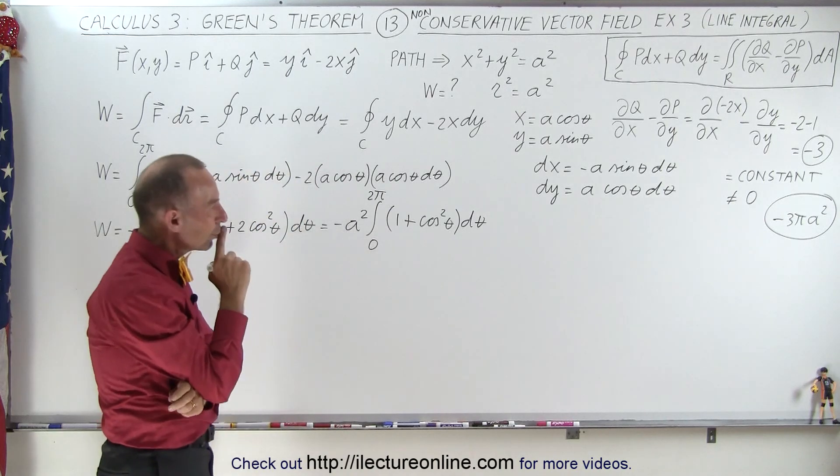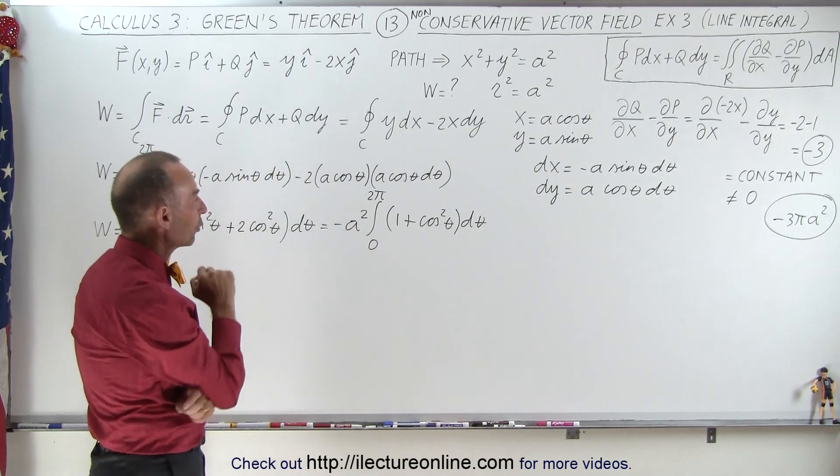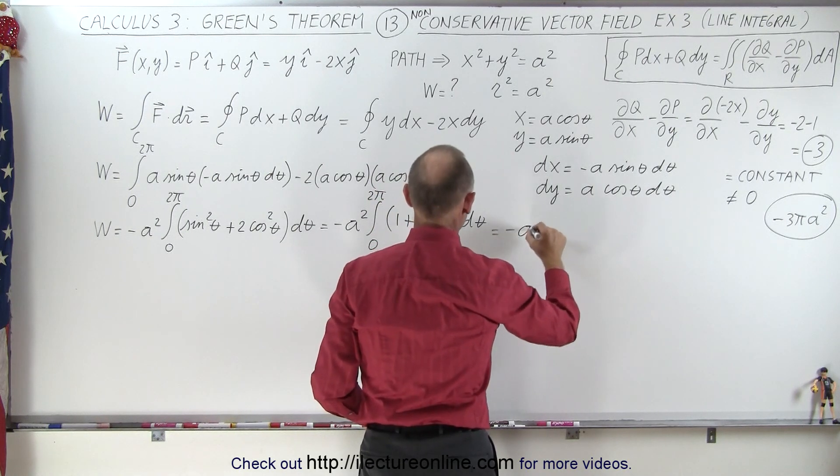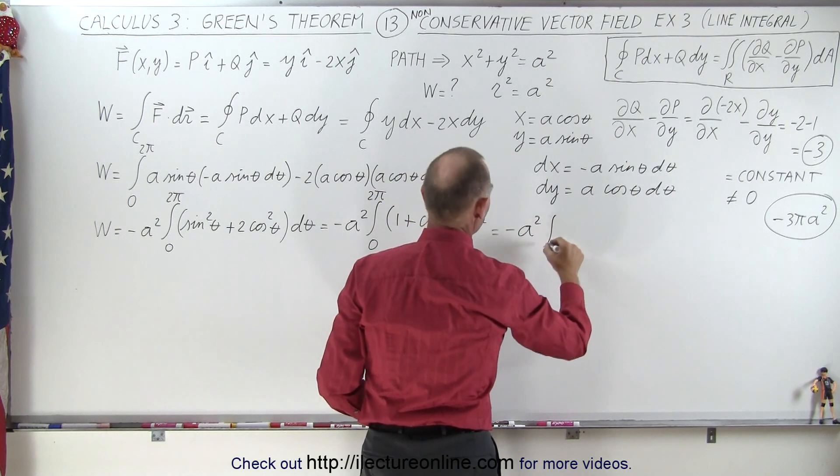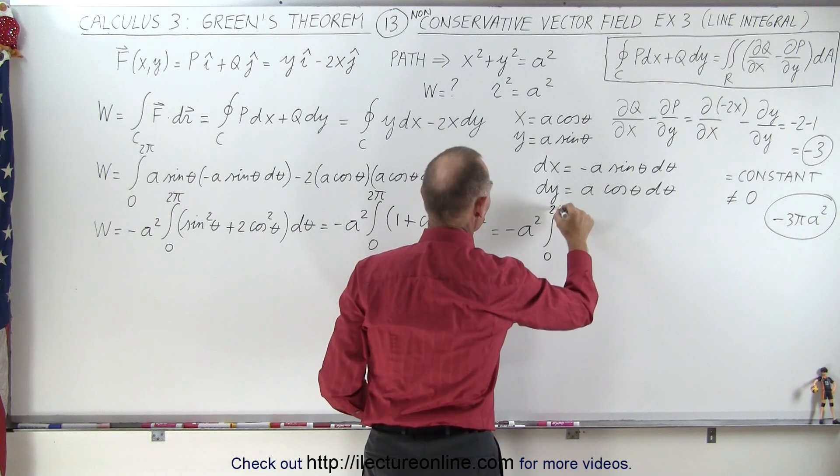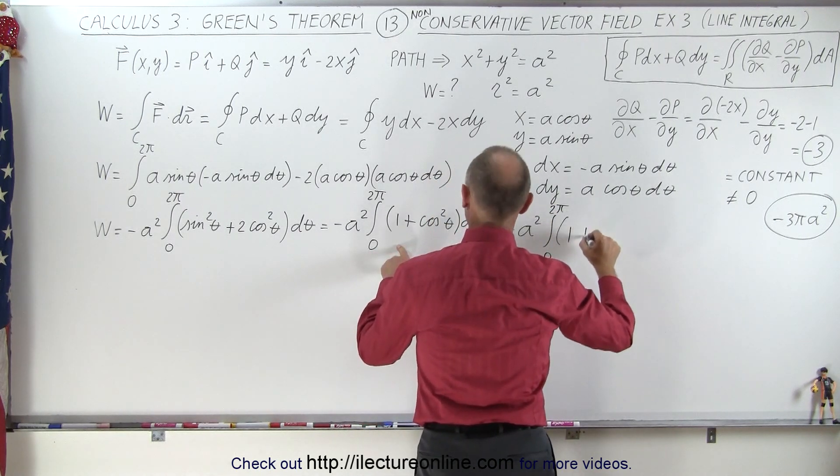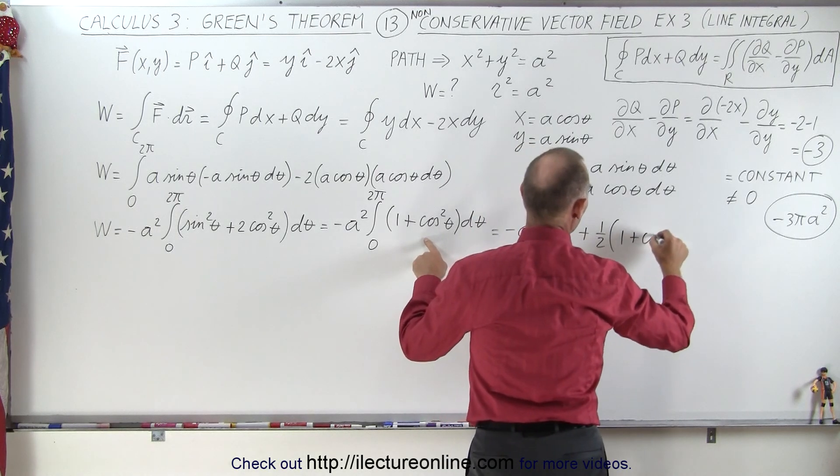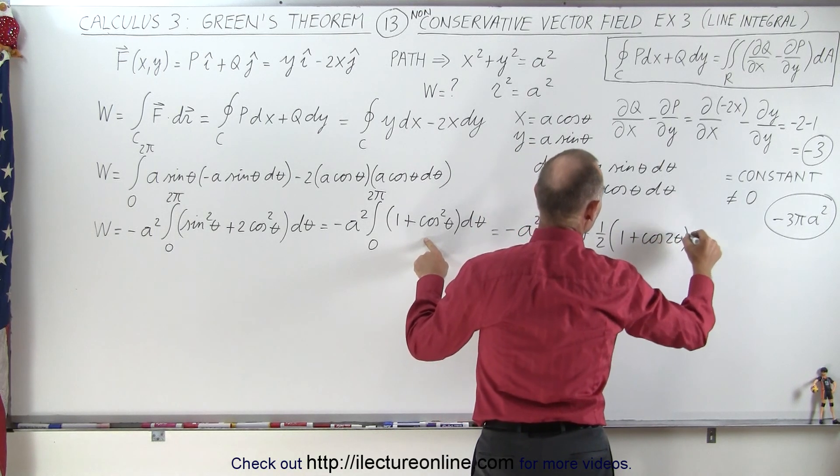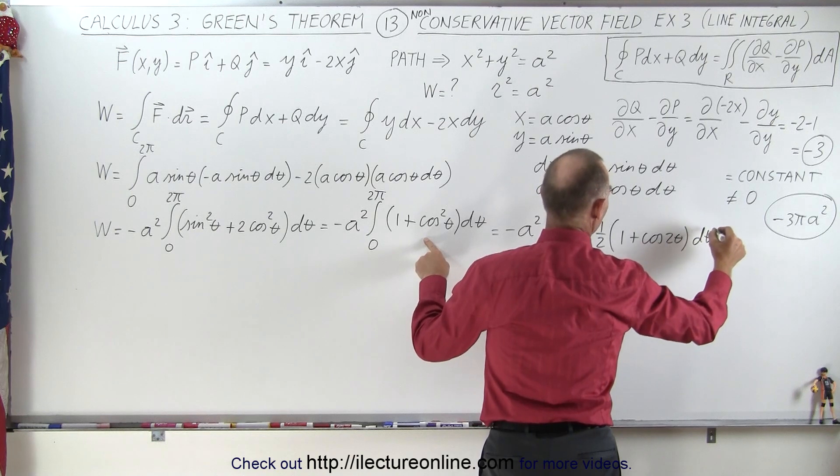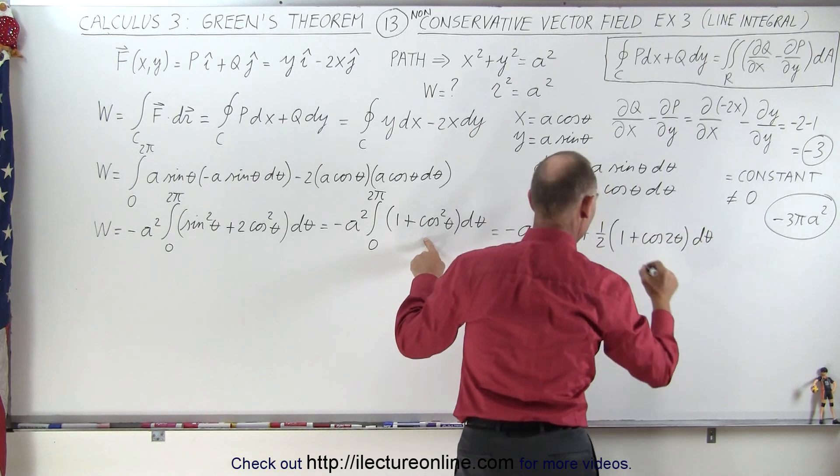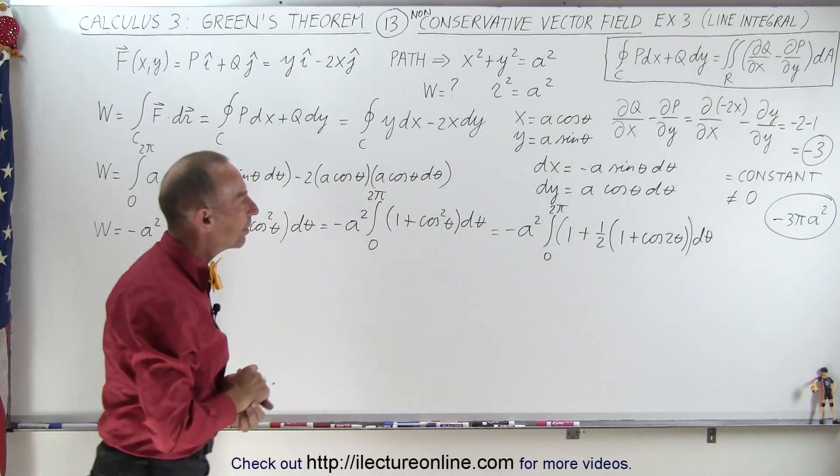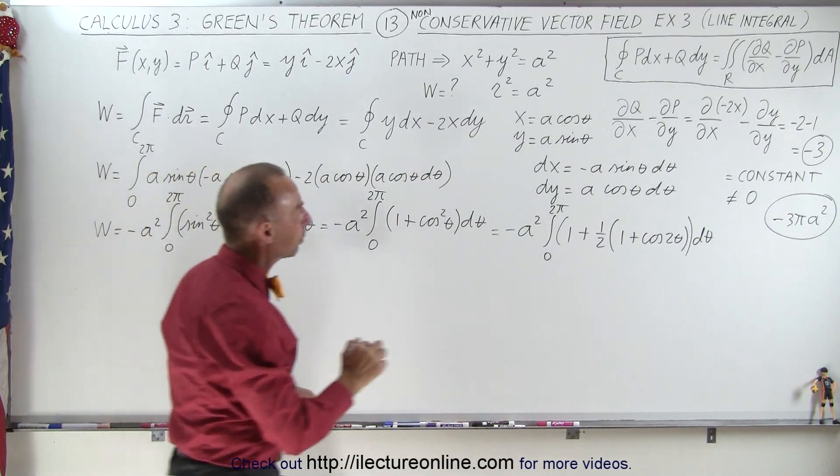So now we need to go to the double angle equivalent of the cosine square of theta. So this can be written as minus a squared times the integral of 0 to 2 pi of 1 plus 1 half times 1 plus the cosine of 2 theta d theta. I probably need another parentheses. Okay, so that gives us 1 plus 1 half.